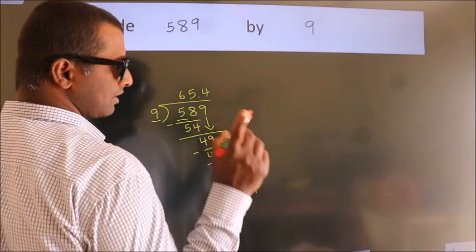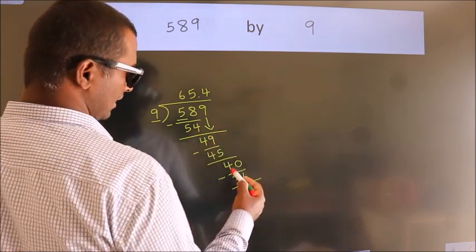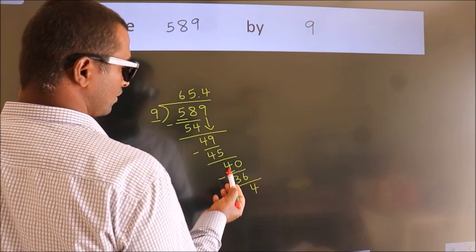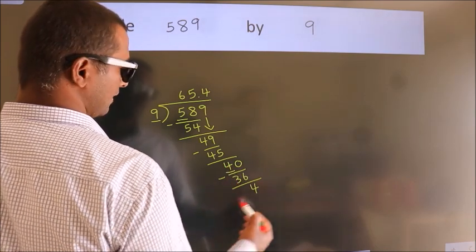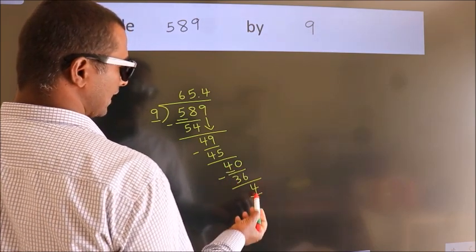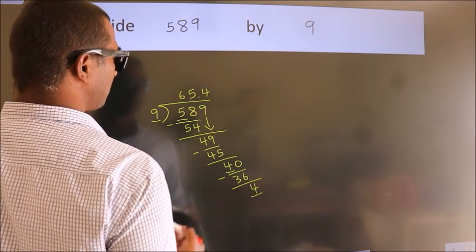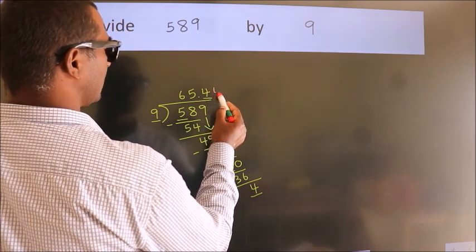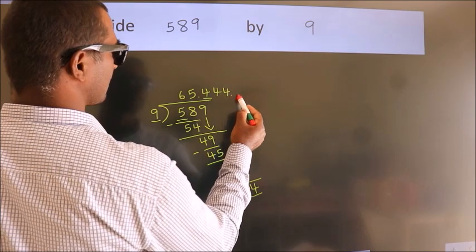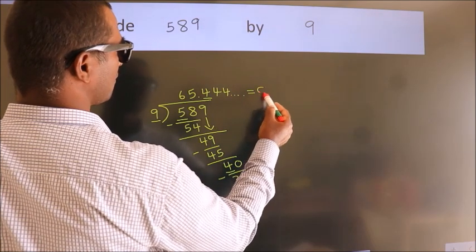Now you observe. Here we had 4 and we got 4 again. That means this number keeps on repeating. So this is our quotient.